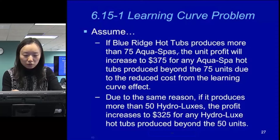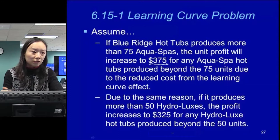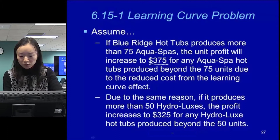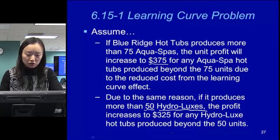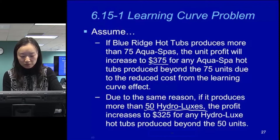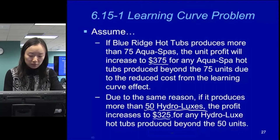So the unit profit will increase: originally it was $350, and it goes to $375 for any unit beyond that. But this new profit does not apply to the first 75 units, because those are already being produced. Same for the hydrolysis — the learning curve effect starts earlier. When you produce more than 50 units, you can get $325, compared to the $300 before.